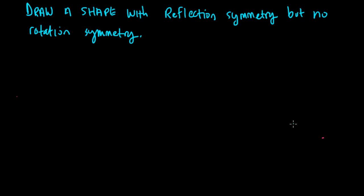In this video, we explore the fun idea of drawing shapes that have one type of symmetry but not another. So here we're looking at a shape with reflection symmetry, but no rotational symmetry, and there's lots of options. I'll show you two.